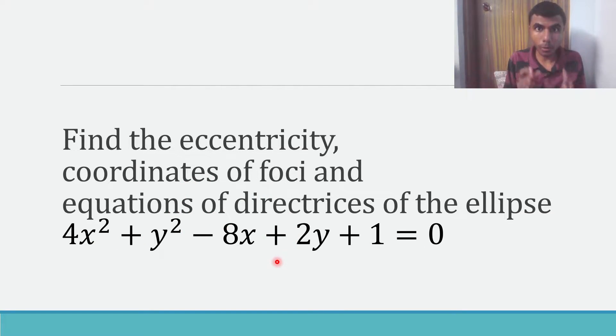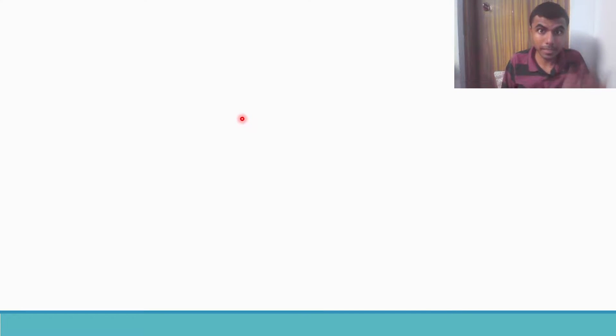First, I want to convert this given ellipse into a standard form. I mean we are just going to rearrange the terms and do some things so that we can convert it to the standard form like (x-h)²/a² + (y-k)²/b² = 1. For that, this is my given ellipse. First, stay with me, I'm going to make it easy for you. Bring x terms to one side like 4x² - 8x, write them together, and y² + 2y, write them together.